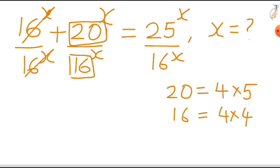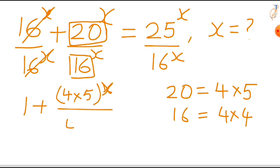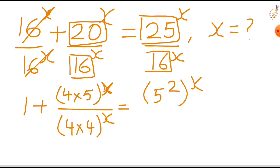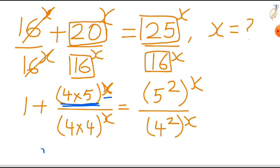Then our equation becomes 1 plus (4×5)^x divided by (4×4)^x. In the RHS we have 25, which we can write as 5², and in the denominator we have 16, which we can write as 4². Now, (4×5)^x is in the form (a×b)^m, which we can write as a^m × b^m.